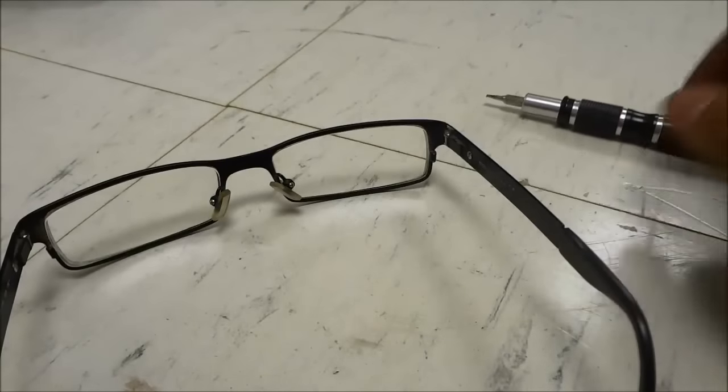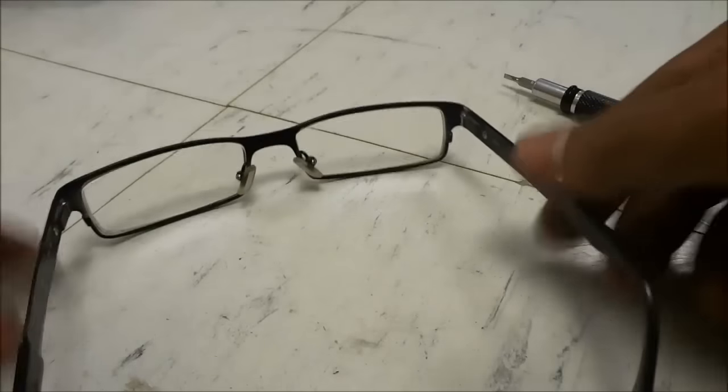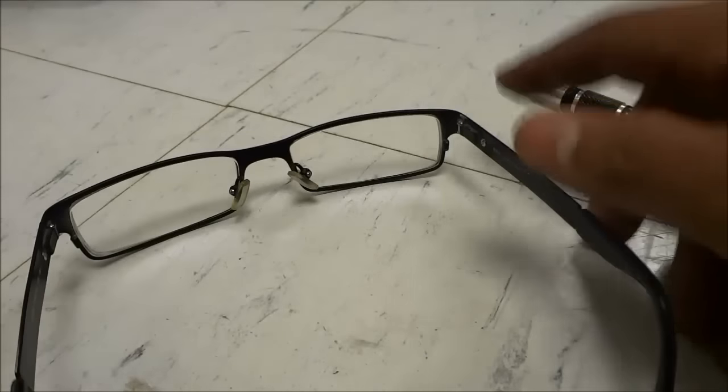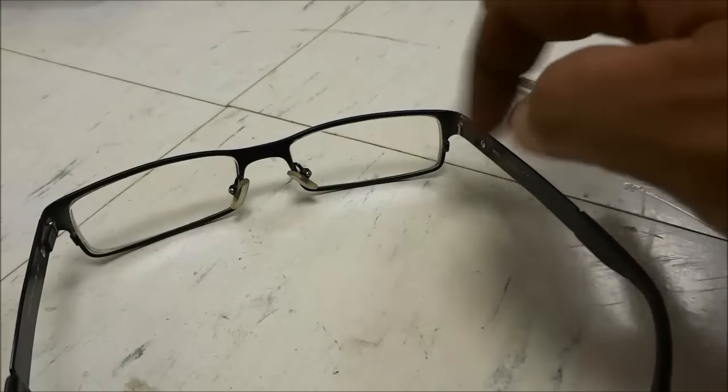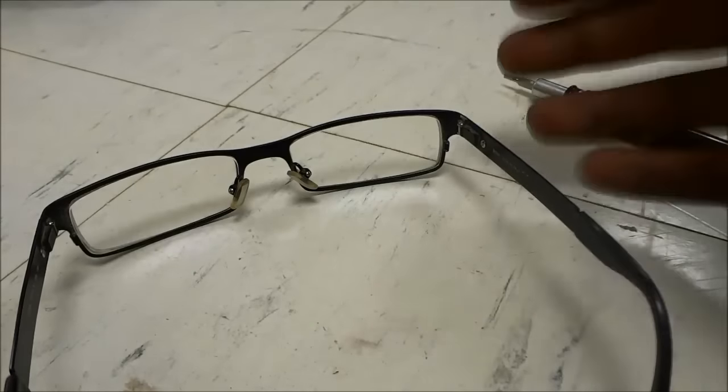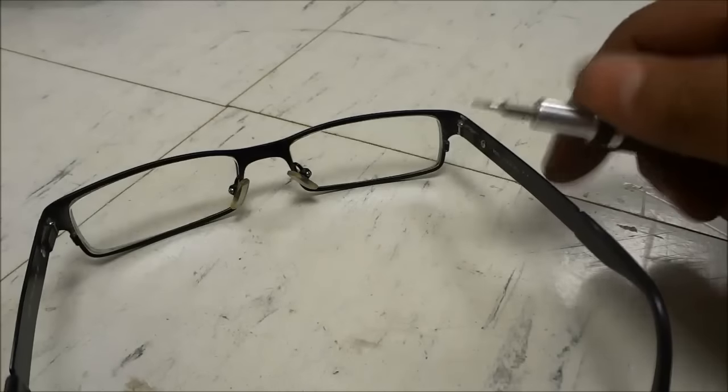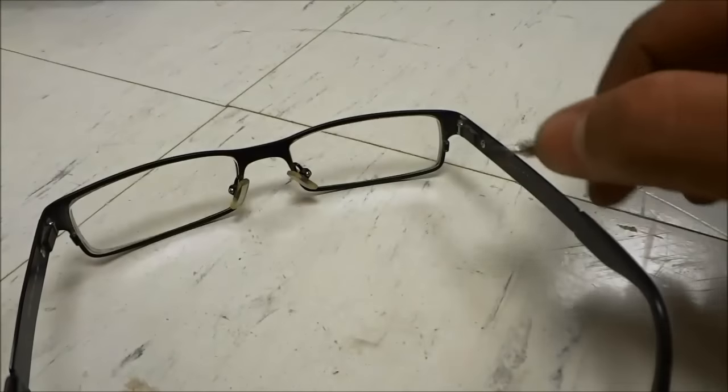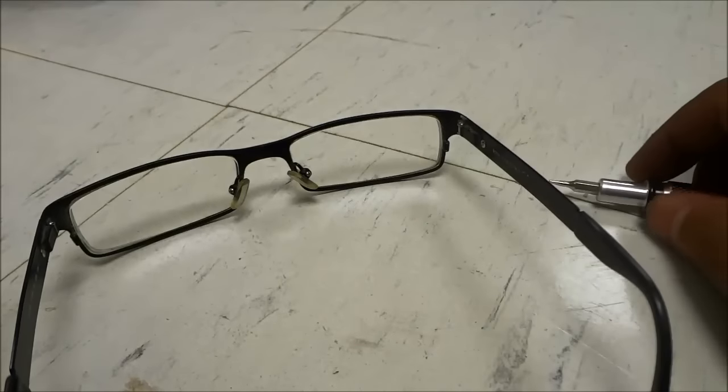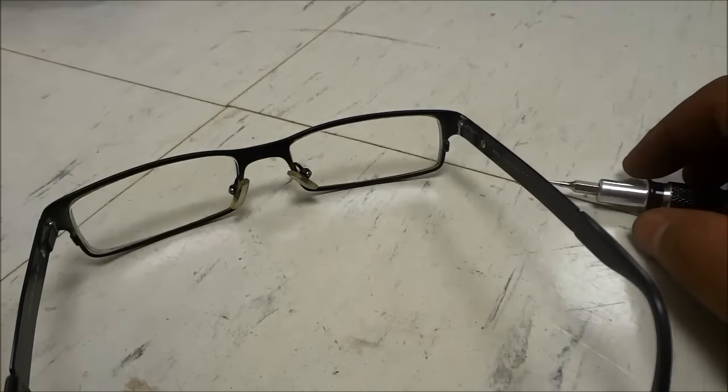So that's basically it. If you want to tighten your glasses, all you have to do is look for a small screw around the loose area and use a small screwdriver with a small screwdriver bit to tighten it. The process is really simple.